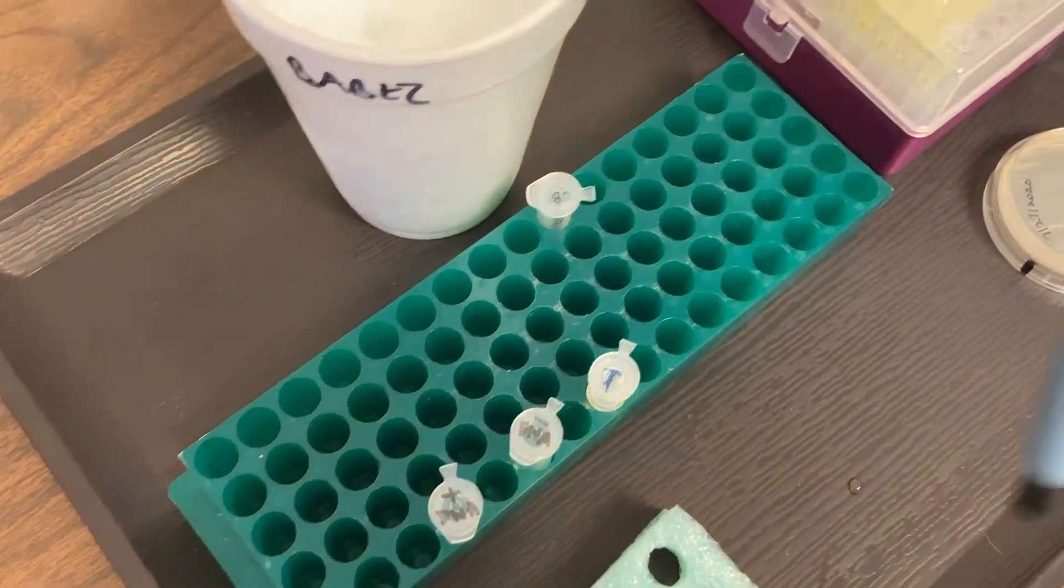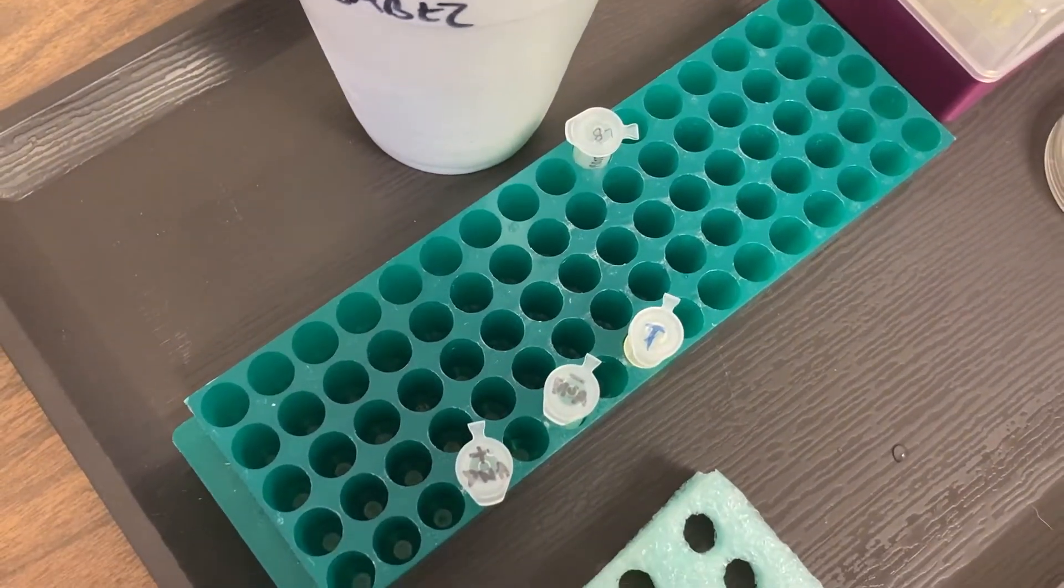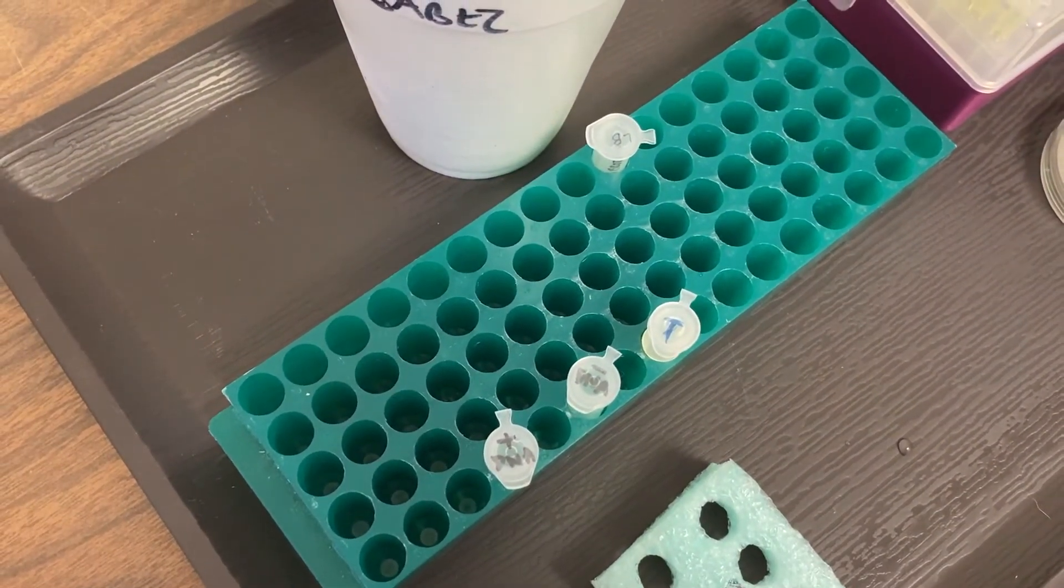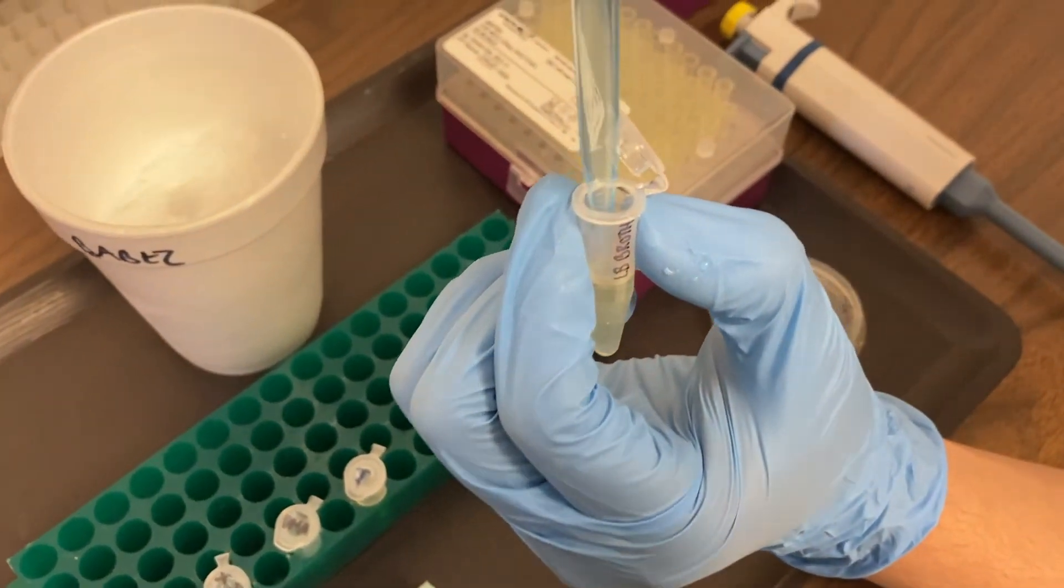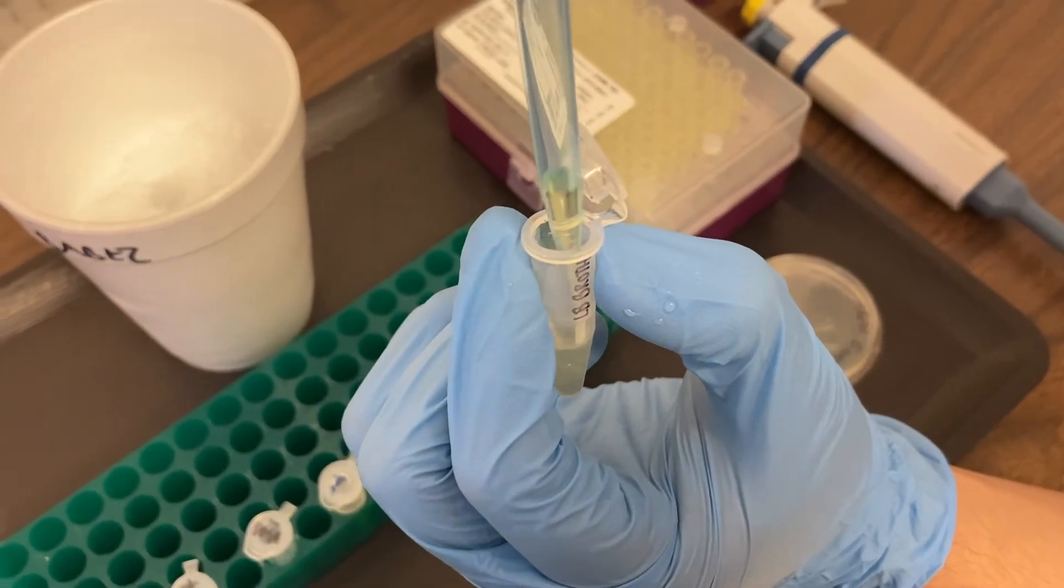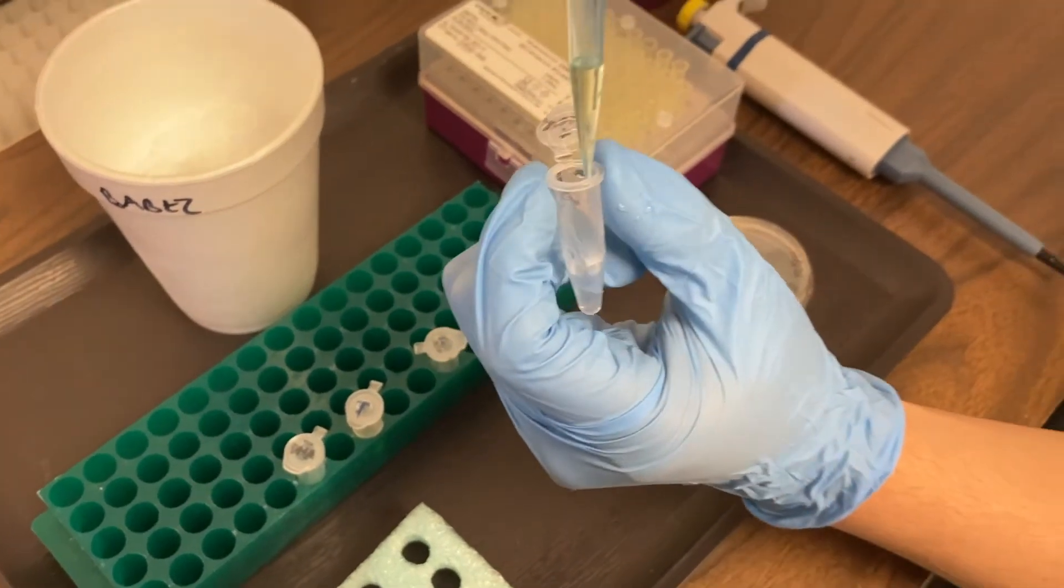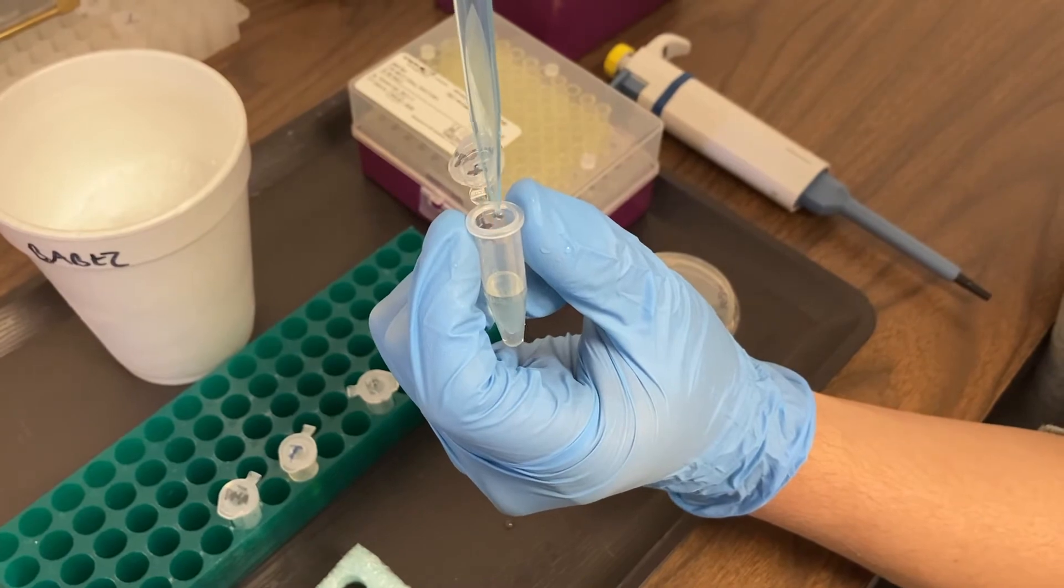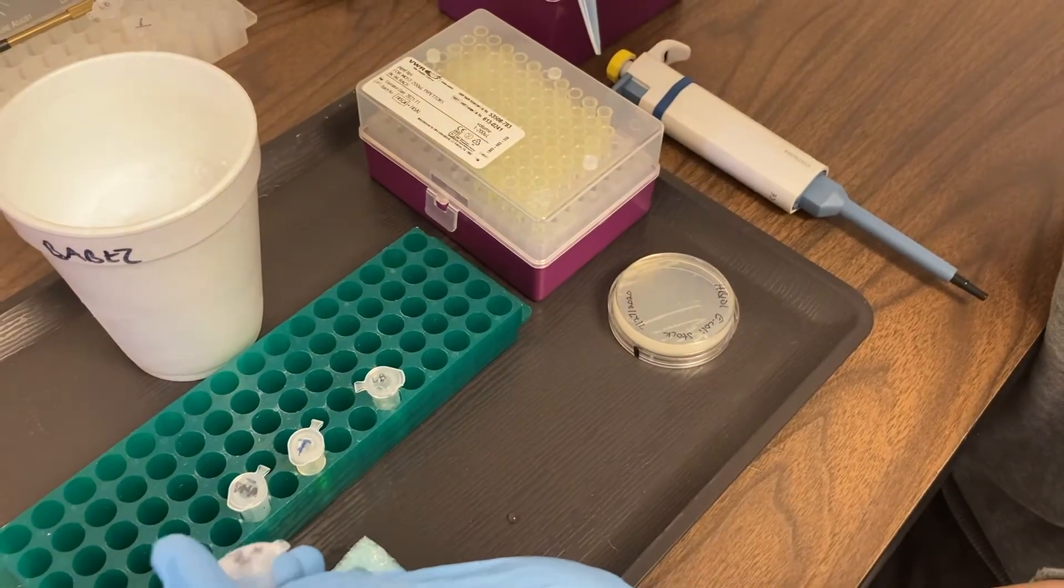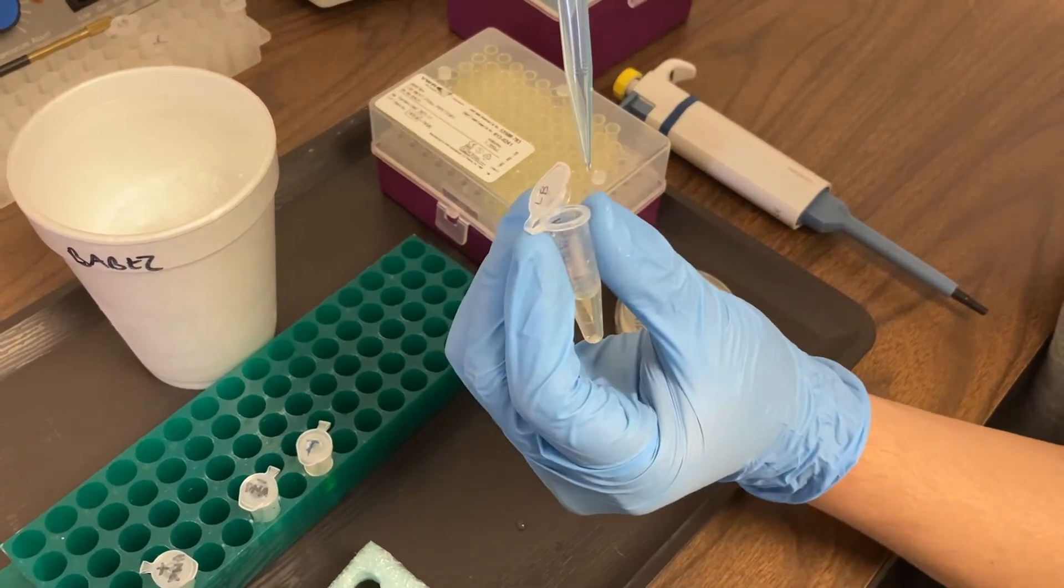In order to do that, we're going to take our micropipet and set it to 300 microliters. There's our LB at the top of the microtube rack. You can see it's yellow in color. What it has in it are sugars and amino acids that the bacteria need in order to be able to grow. So we're going to add the LB right on top to our plus DNA tube. Then we're going to add LB to our minus DNA tube.